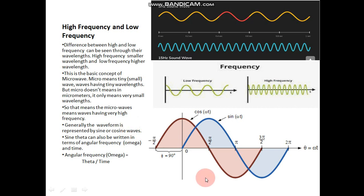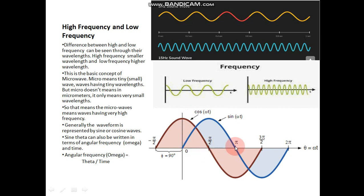Waves are normally expressed in the form of sine and cosine. If you see, this is sine theta and this is cosine theta. The angles are: zero, pi by 2, pi, 3 pi by 2, and 2 pi. On this x-axis it is always the angle, and on the y-axis it is always the amplitude. Now this theta can also be expressed in terms of time.